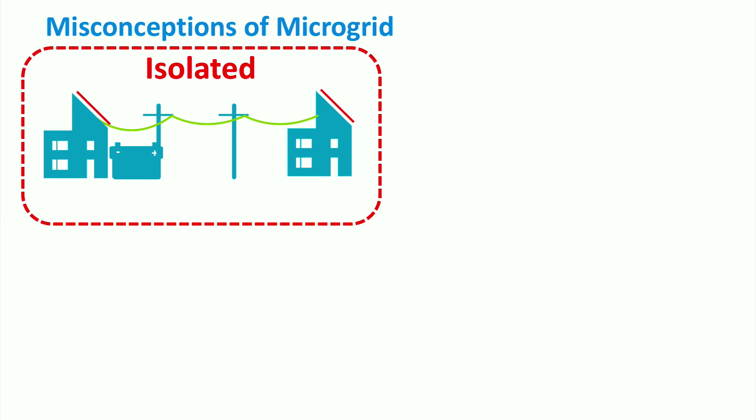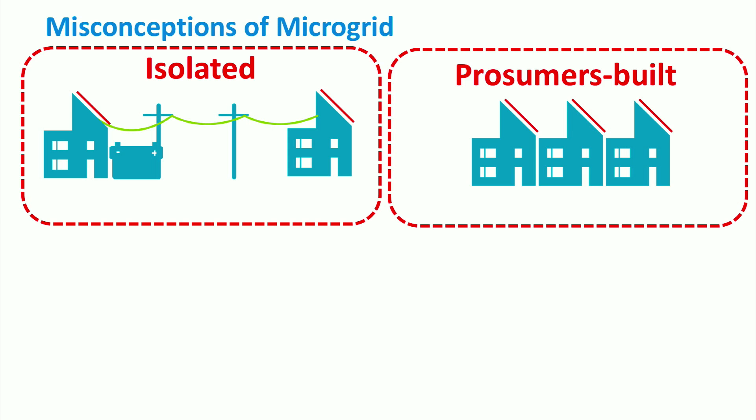Second, it can be believed that a group of customers who own microsources make up a microgrid. However, if there is no interaction with a central microgrid controller or a coordination between the actors, a group of customers owning microsources is not considered a microgrid, because management and coordination is a vital part of microgrids and active distribution networks, as we discussed in our previous lectures.